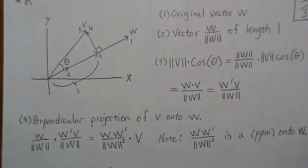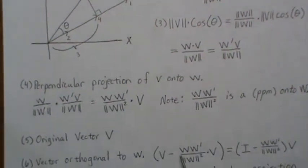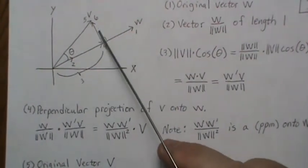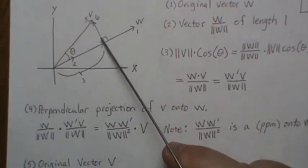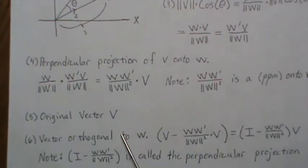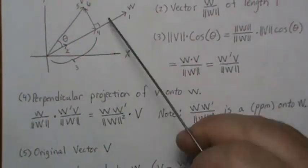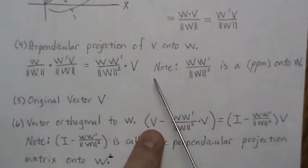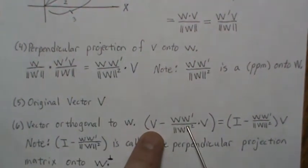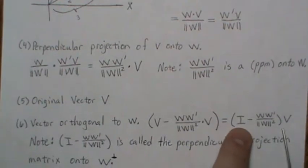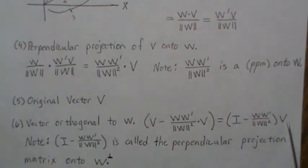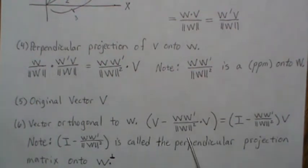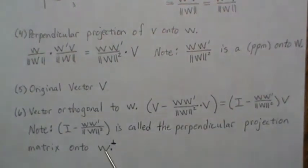The original vector V (labeled 5) minus the projection vector (labeled 4) gives vector 6, which is the vector orthogonal to W. So V minus (W W^T / |W|²) V, factoring out V, gives (I - W W^T / |W|²) times V. Since V is arbitrary, this matrix is called the perpendicular projection matrix onto the orthogonal complement of W.